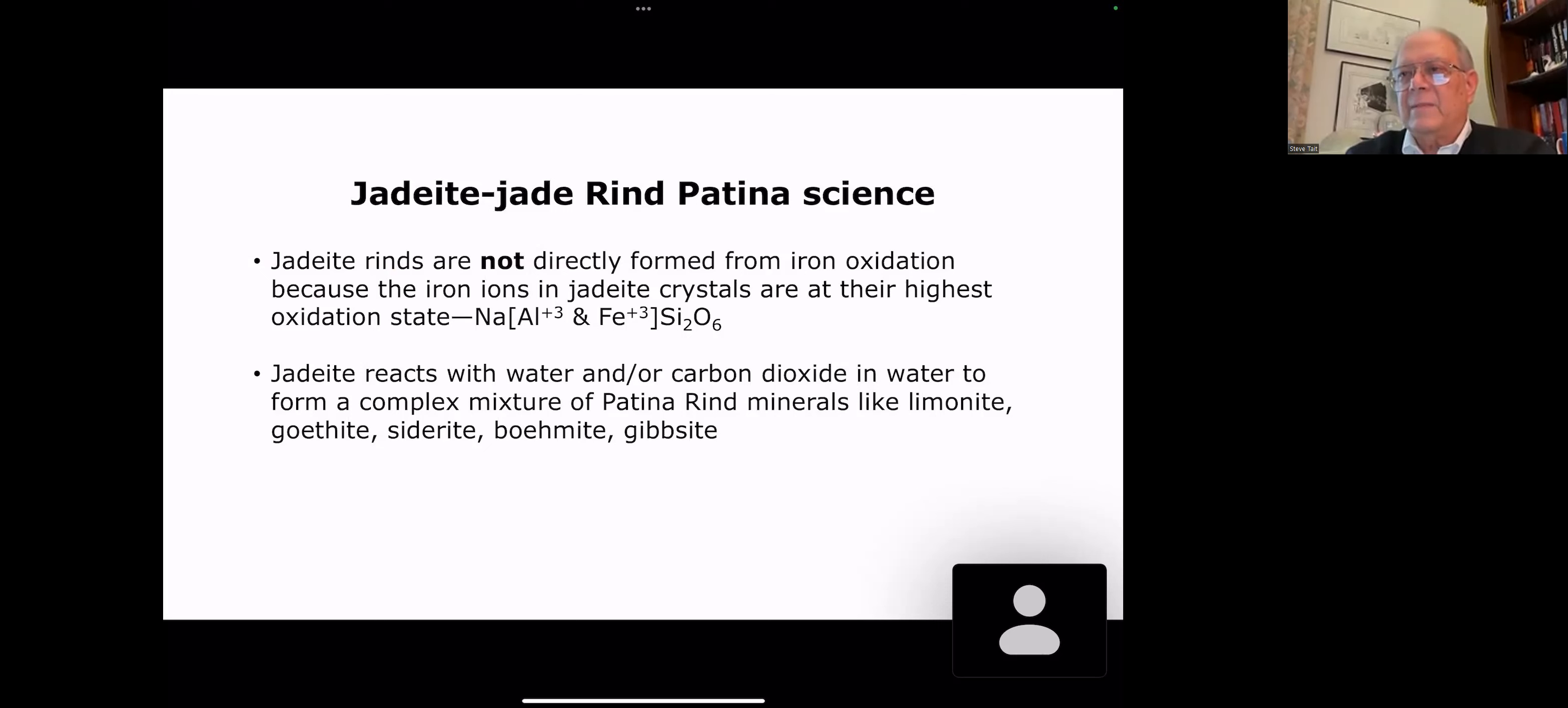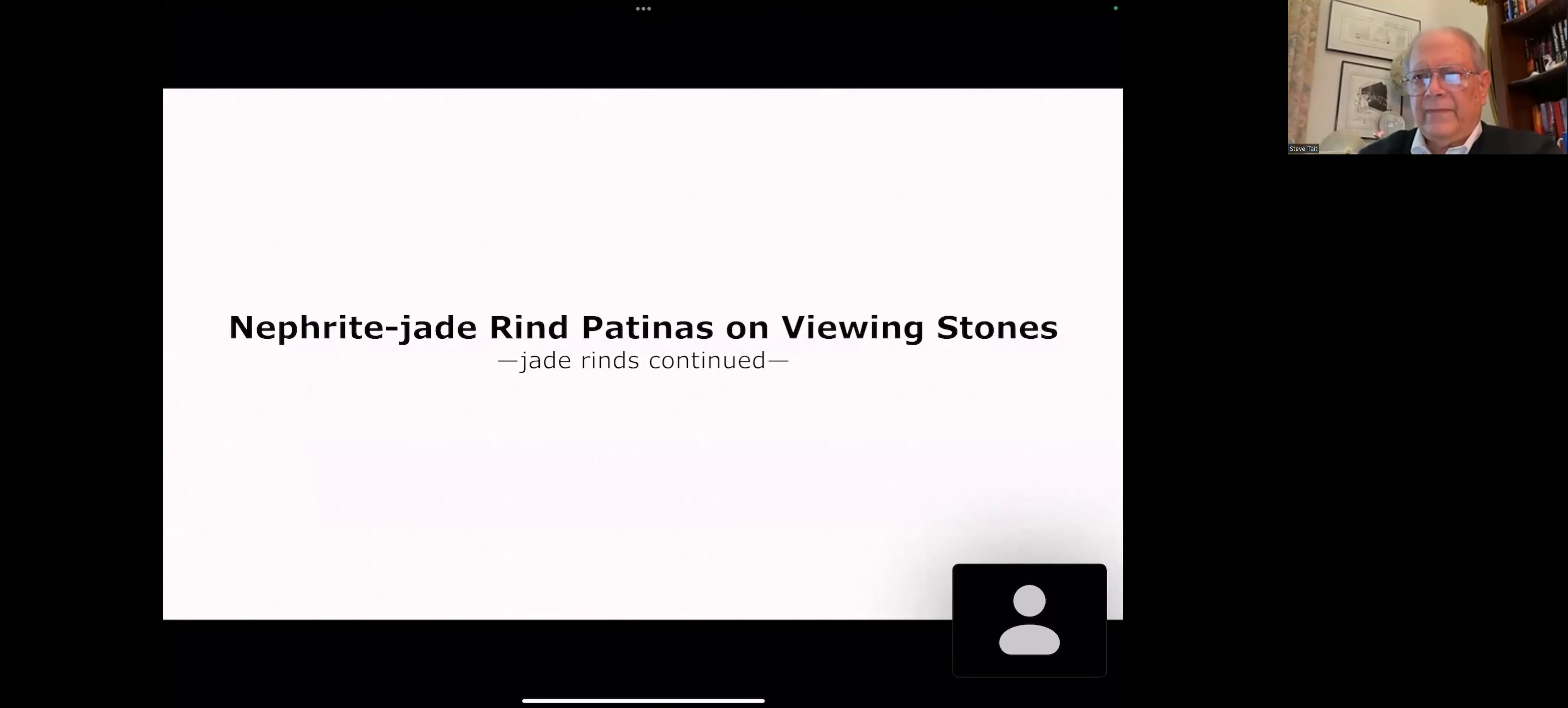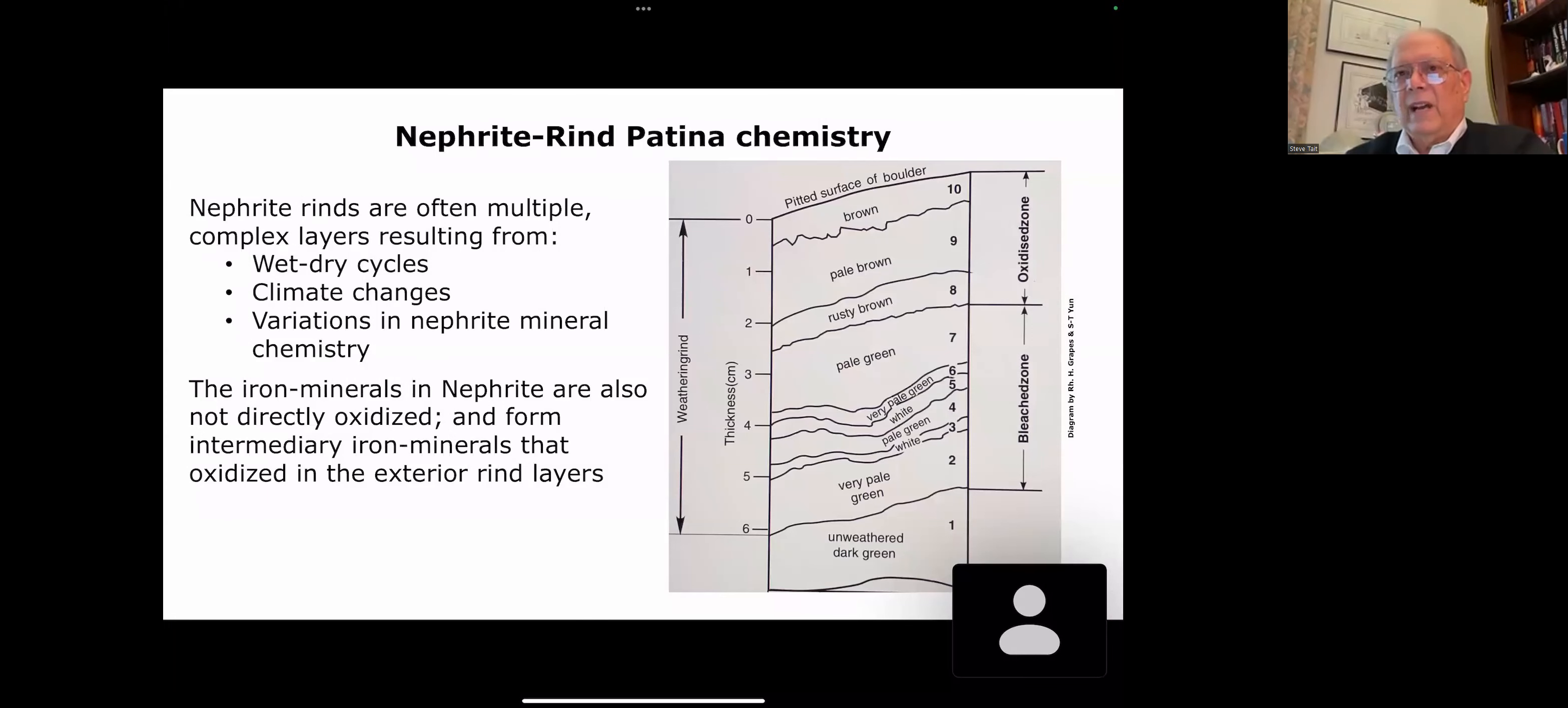A lot of people think that the jade mineral is oxidizing, but it's not directly. You're not forming the rind directly from oxidation because the iron and the aluminum, both in the crystal structure of the mineral, are at their highest oxidation state. The jadeite reacts with water and carbon dioxide and water to form a complex mixture of patina rind minerals like limonite, goethite, siderite, boehmite, gibbsite, all things that can react with water and carbon dioxide in this mineral here. I'm going to move on to nephrite before summarizing rind mineral colors because nephrite forms a lot of the same rind minerals.